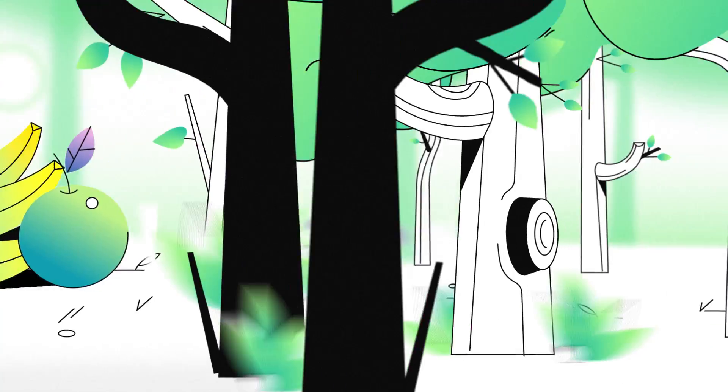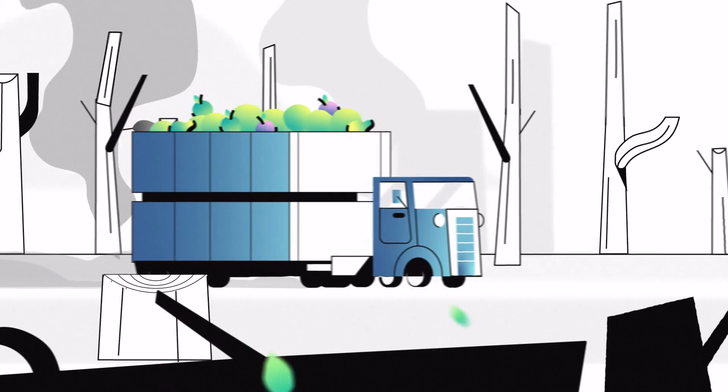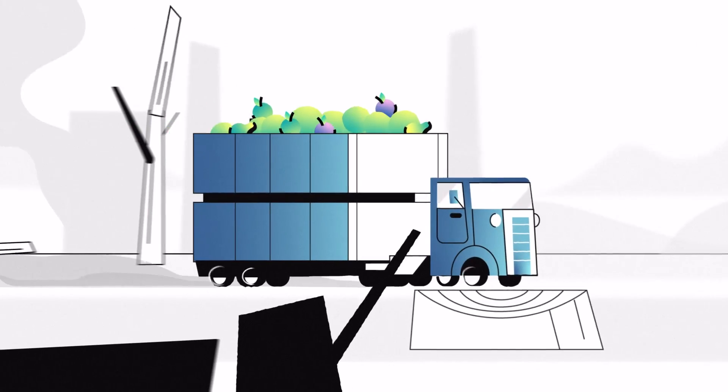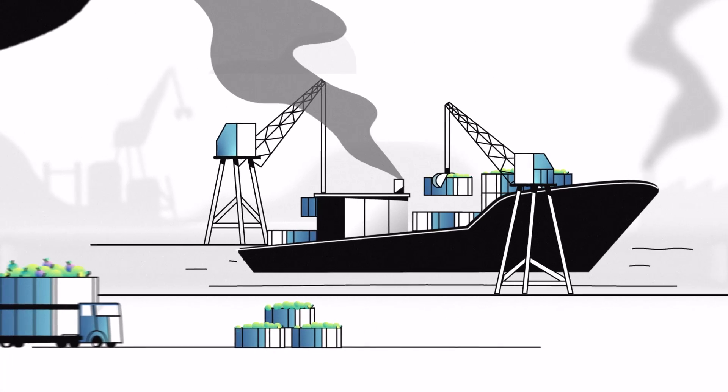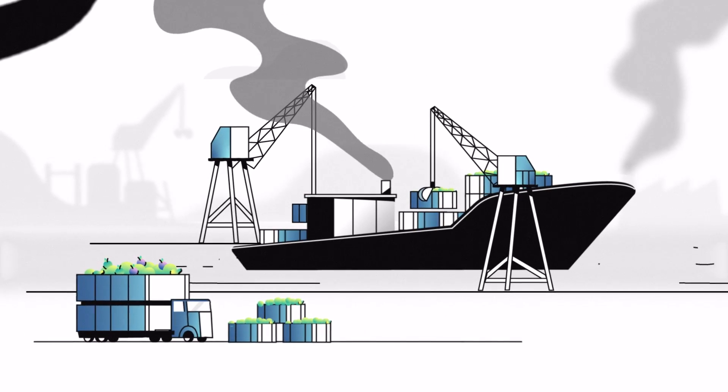Our global food chain is broken. It's overwhelmed with food shortages, deforestation and high carbon emissions. Unless we act, we won't be able to feed our growing population.